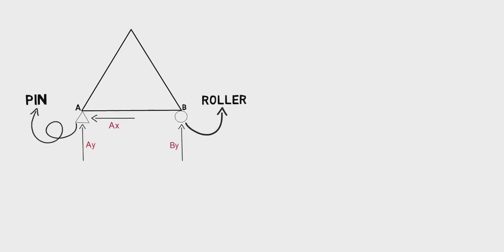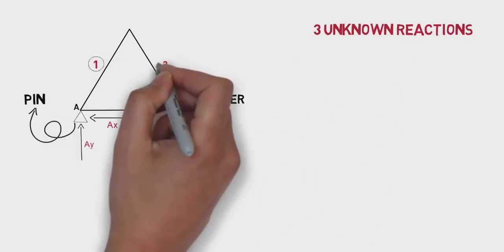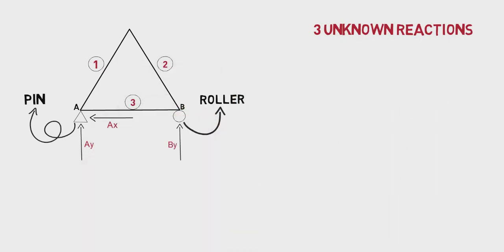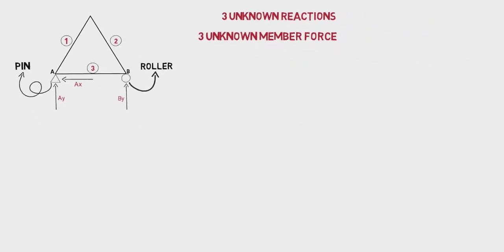And we also know that a truss member is a single force member. We have one force per member. In our case we would have three unknowns from members. Total of six unknowns.